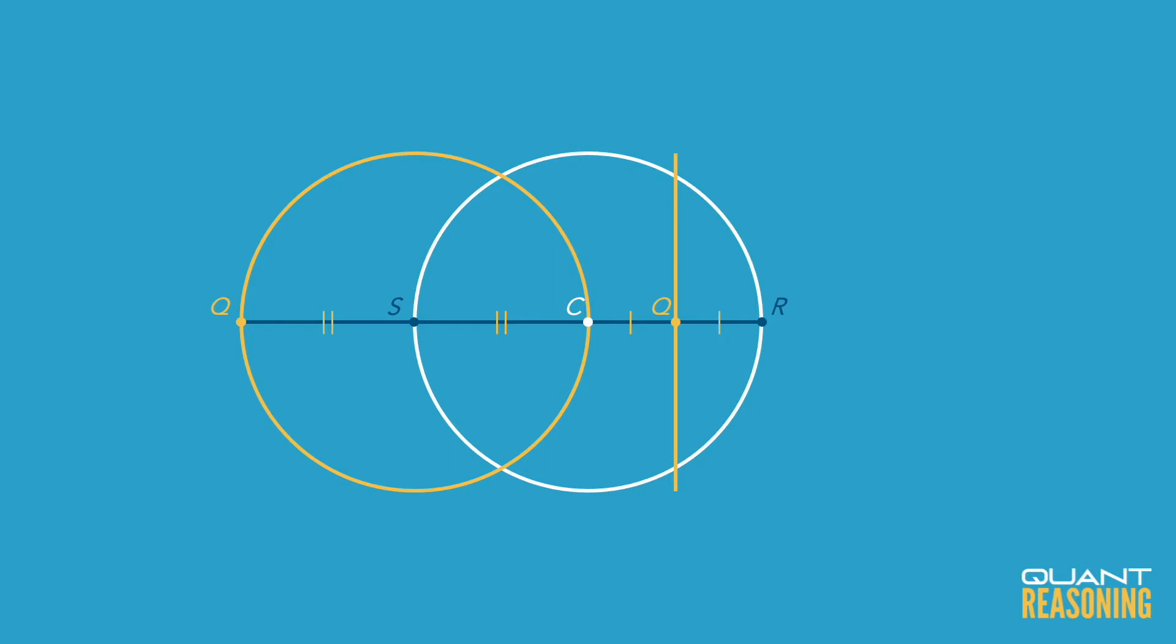We know that on the one hand Q sits somewhere on that imaginary straight line that goes through the middle between C and R. On the other hand, we know that Q is exactly one radius away from point S.